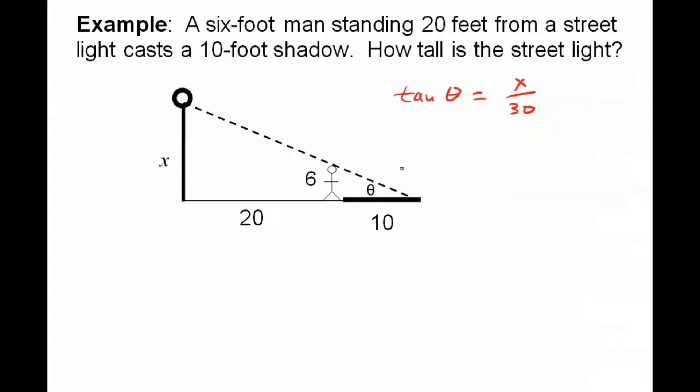Now if I look at the smaller triangle here, I think I can find what theta is because I actually have a 6 and a 10. So that's kind of a separate problem. But I've got the tangent of theta is the opposite, which is 6, over the adjacent, which is 10. So the tangent of theta is actually 0.6.